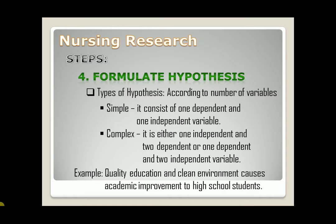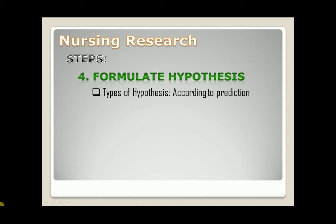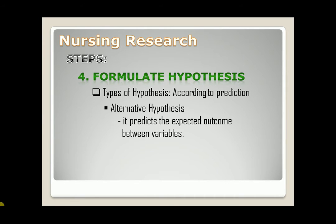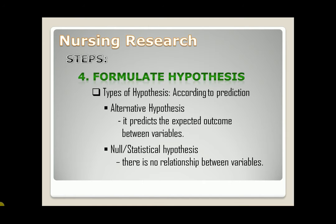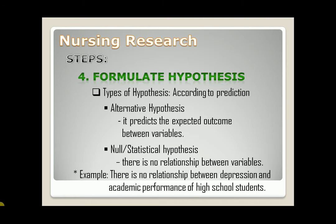High school students is the population. Next, types of hypothesis according to prediction: first, alternative hypothesis — it predicts the expected outcome between variables. Second, null or statistical hypothesis — there is no relationship between variables. For example, there is no relationship between depression and academic performance of high school students.